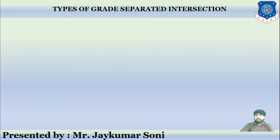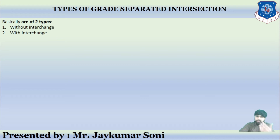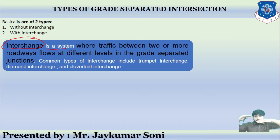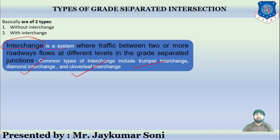Now comes the types of grade separated intersections. Basically there are two types: without interchange and with interchange. An interchange is a system where the traffic between two or more roadways flows at different levels at the grade separated junction. Common types of interchange include trumpet interchange, diamond interchange, and cloverleaf interchange.